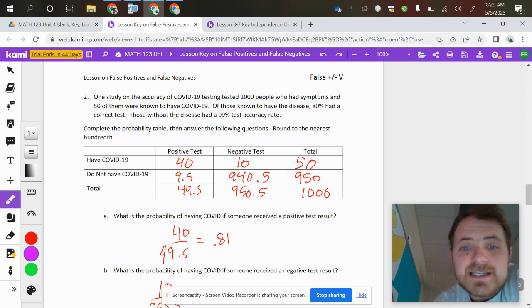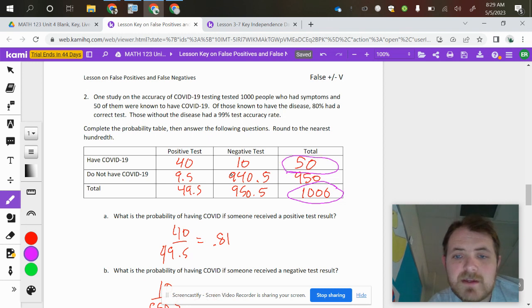So it says that they tested a total of 1,000 people. So we're going to dump 1,000 into that bottom right corner right there. 50 of the people were known to have COVID, making 950, because they have to add up to 1,000, the people that do not have COVID-19.